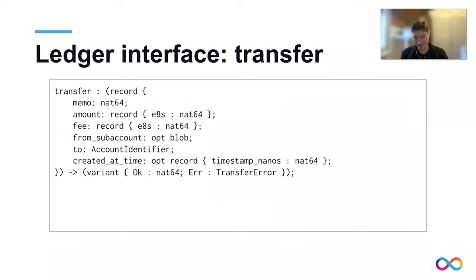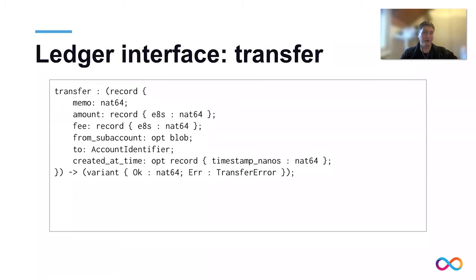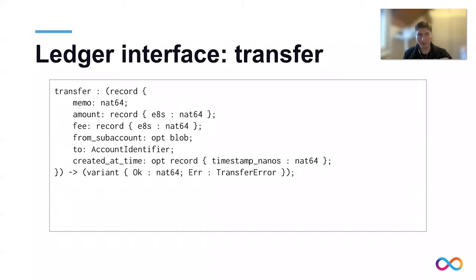Let's look at the main method the ledger provides for a canister — transfer. It's a bit complex, but we'll go line by line. Transfer: the idea is you move funds from one account to another account on the ledger and you pay some fee for that. The first field in the transfer record is a memo. The ledger doesn't care about this field — it only exists so that you can attach some metadata to the transaction. For the ledger, this field doesn't mean anything; it's just a number. We'll see later in the communication patterns how you can use this field to your benefit. For now, you can set it to any number — the ledger doesn't care, but you might.